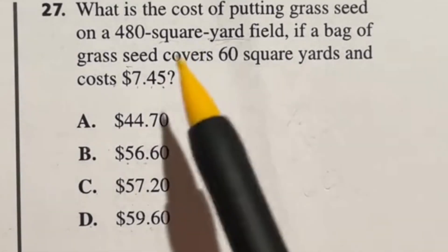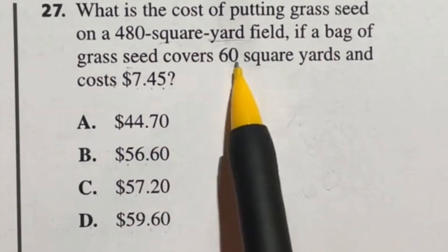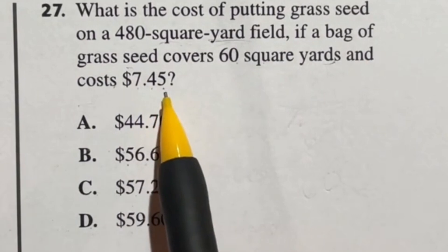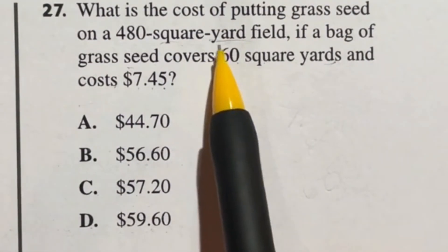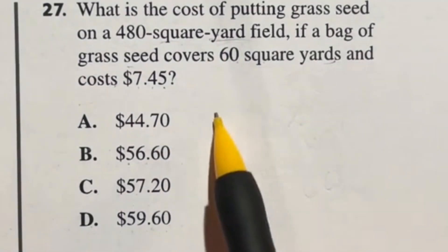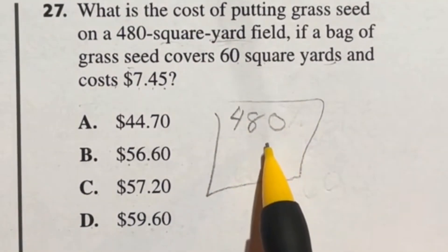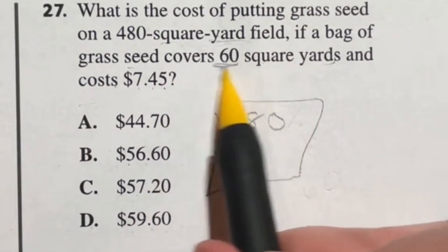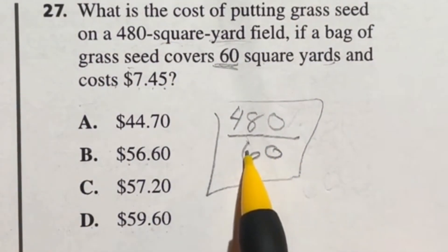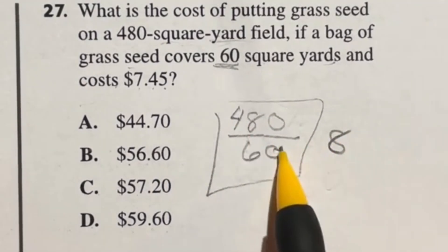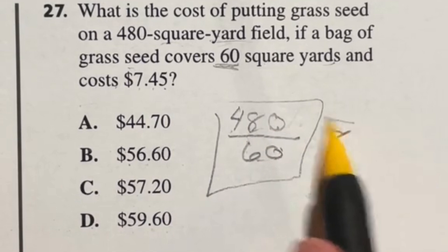Number 27. What is the cost of putting grass seed on a 480 square yard field if a bag of grass seed covers 60 square yards and costs $7.45? Now in previous videos sometimes it jumps between feet and yards. In this case we have yards and yards so we're good. We don't even have to find the area. It tells us there's 480 square yards in this field. We need to find out how many bags of 60 square yards would cover that. So we're dividing by 60. 6 goes into 48 eight times, so it's 8. We need eight bags.